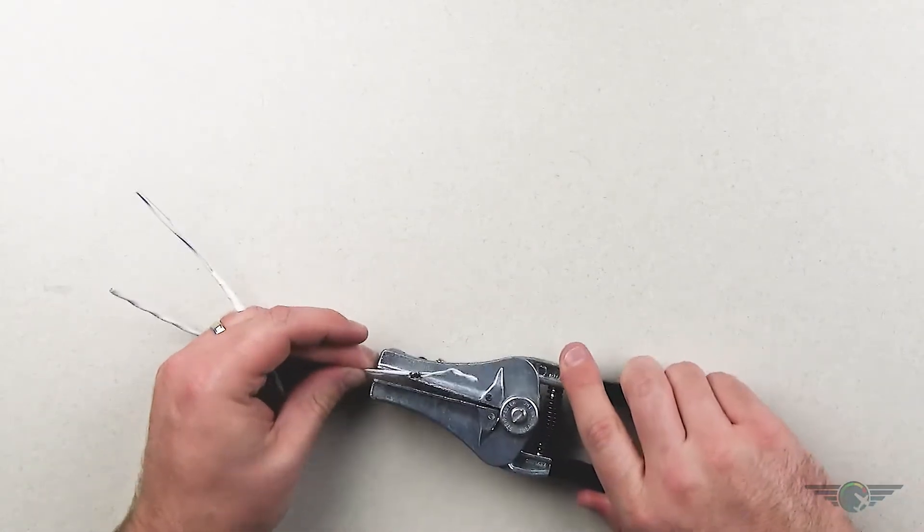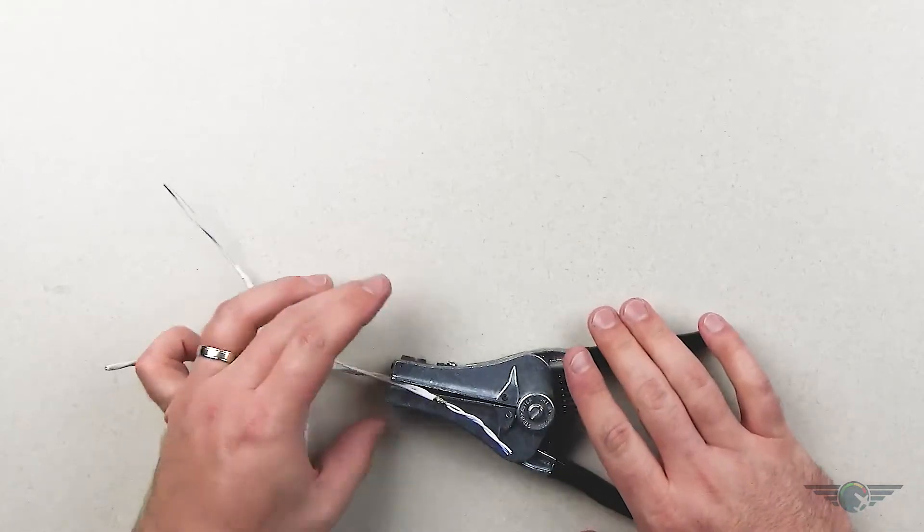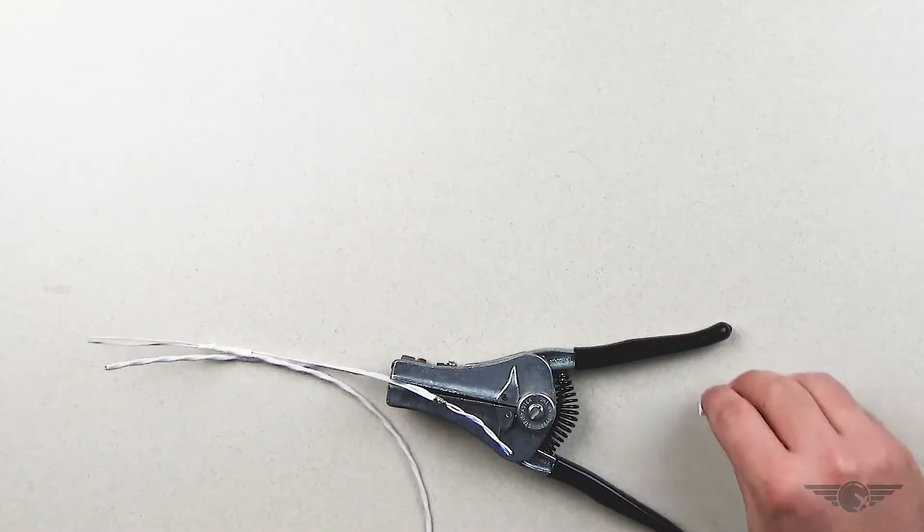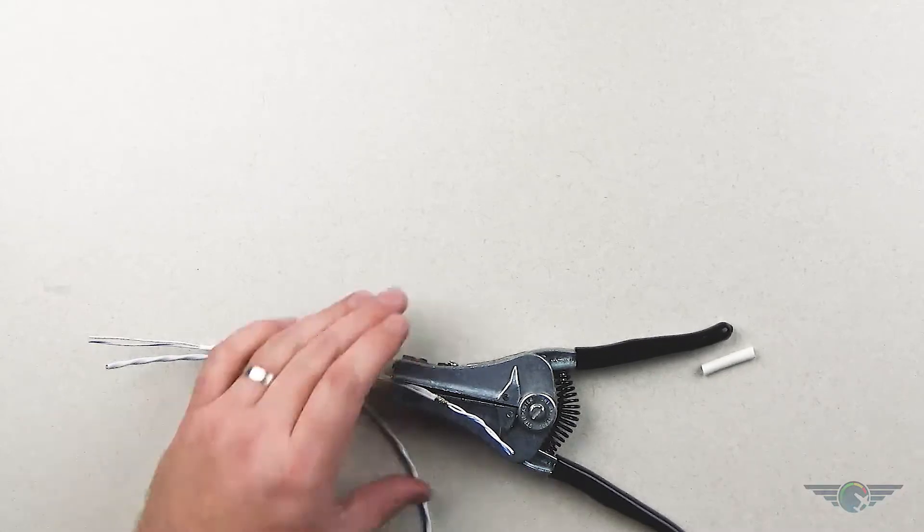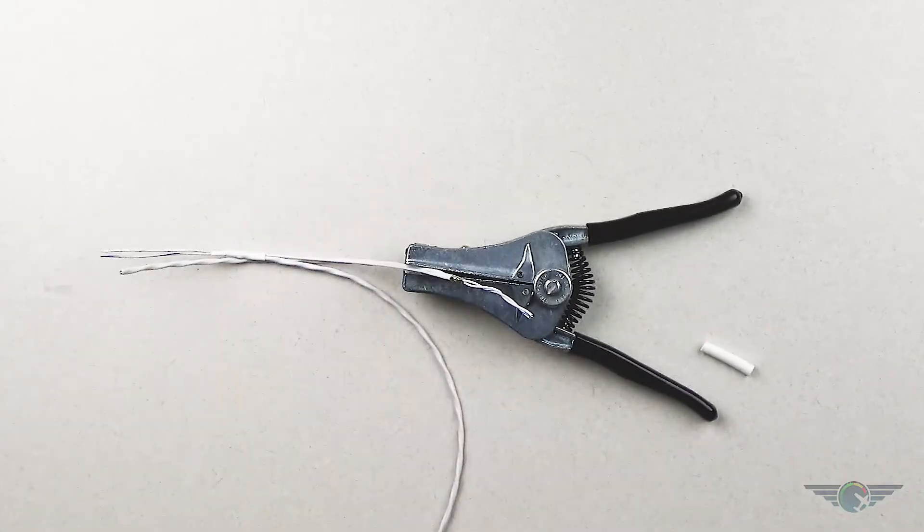And then again with my wire strippers there is my helping hands. And we've got a piece of heat shrink for when we're ready for it. So I'm going to take my soldering iron.